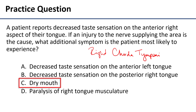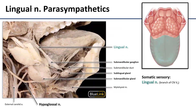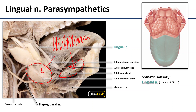Knowing that, we can use it to answer the question. Does the right chorda tympani carry taste sensation from the left tongue? No. From the posterior right tongue? No — that's glossopharyngeal. Would the musculature on that side be paralyzed? No — that's carried by the hypoglossal. So by process of elimination, dry mouth is the most likely answer. The reason it absolutely is correct is because the parasympathetics that innervate both the sublingual and submandibular glands are also carried by the chorda tympani. Any injury to that nerve would not only affect taste on that side of the tongue — it would also inhibit secretion by these two salivary glands. Dry mouth and decreased taste go hand in hand.